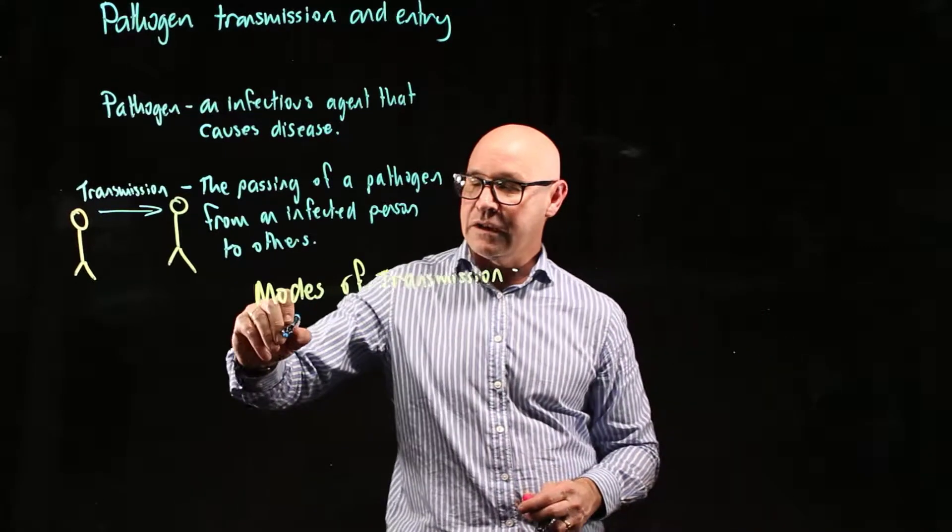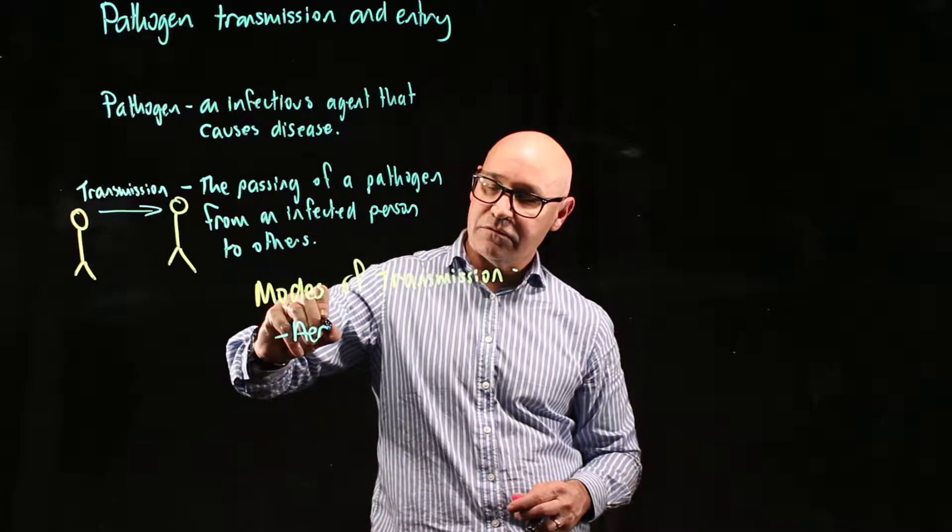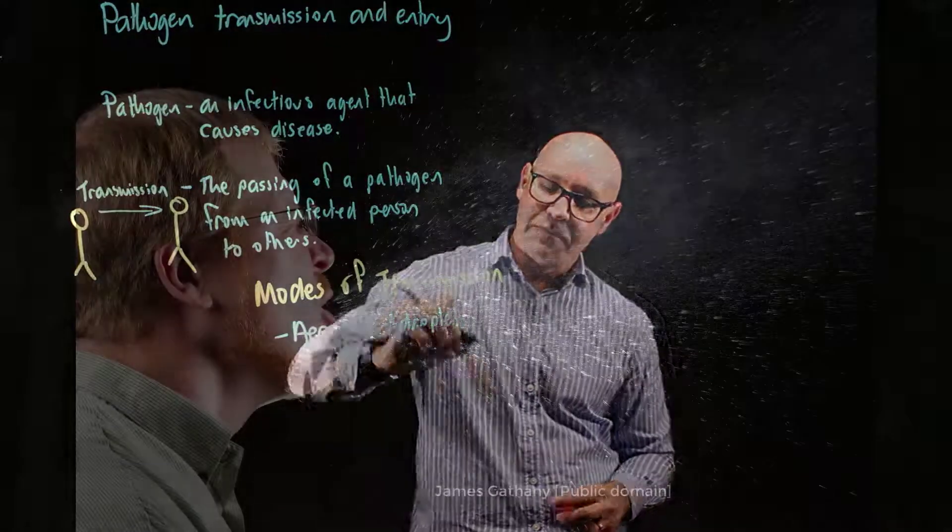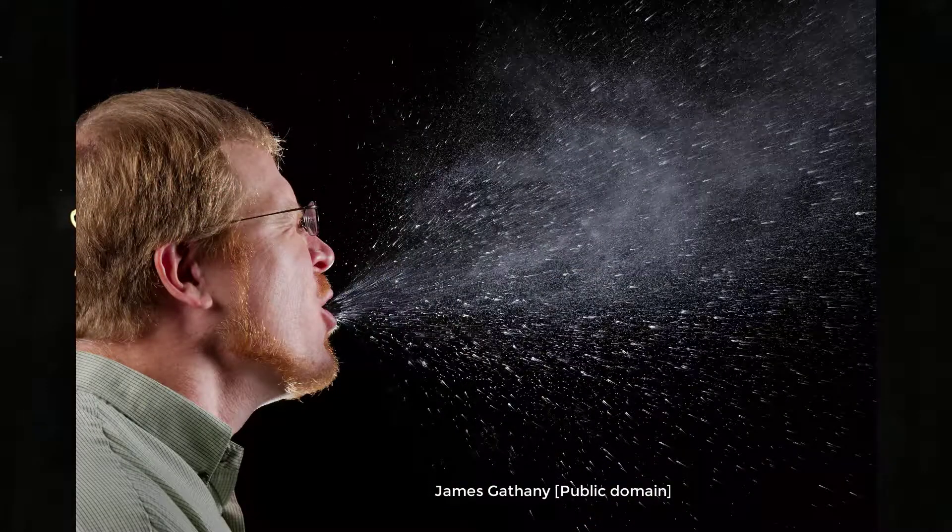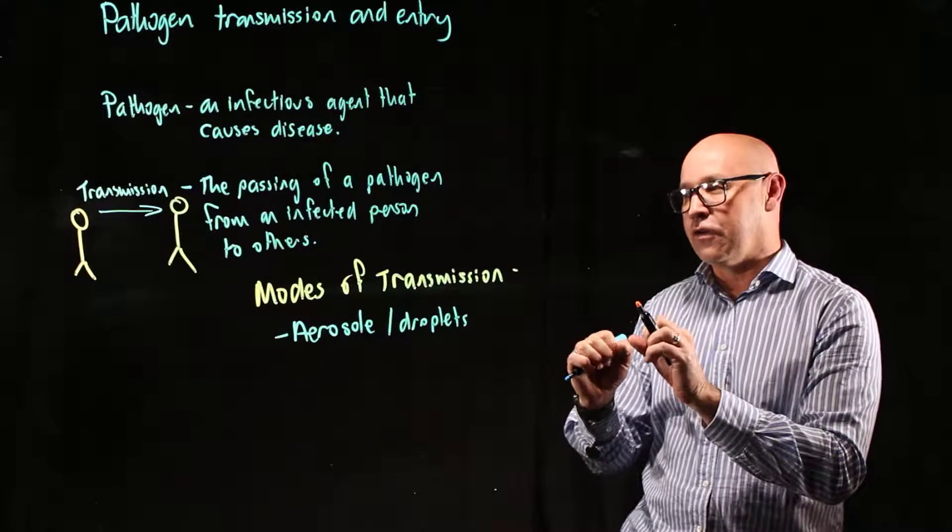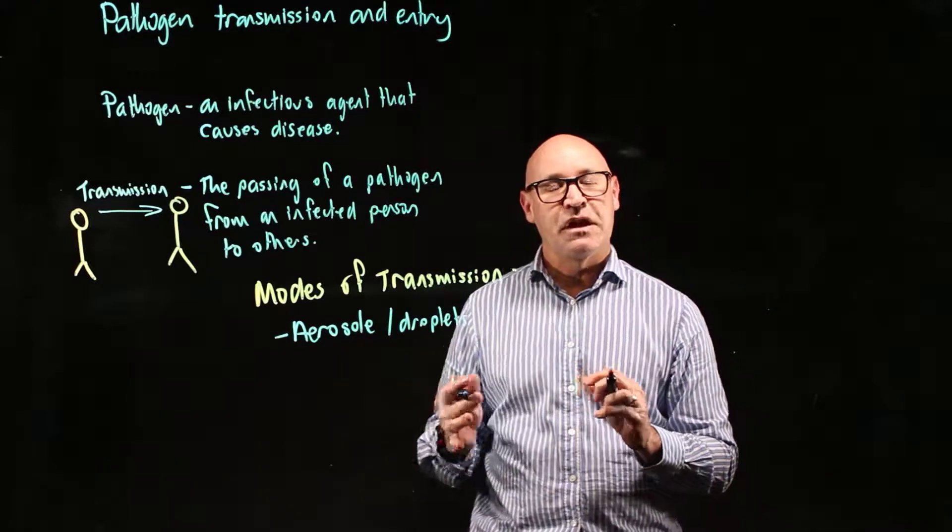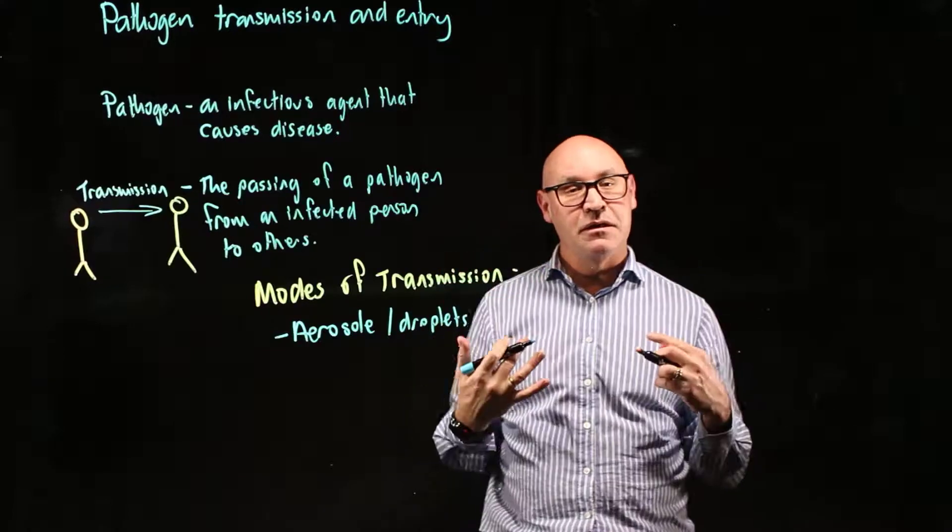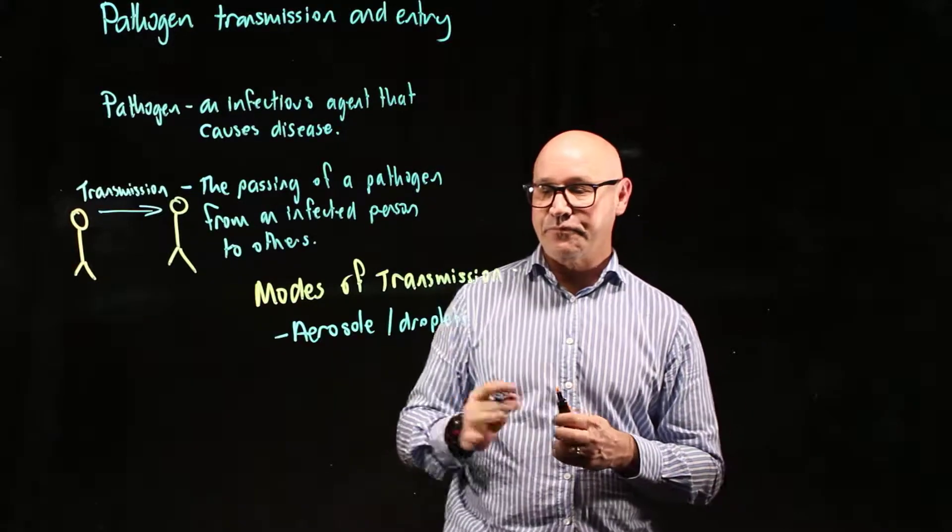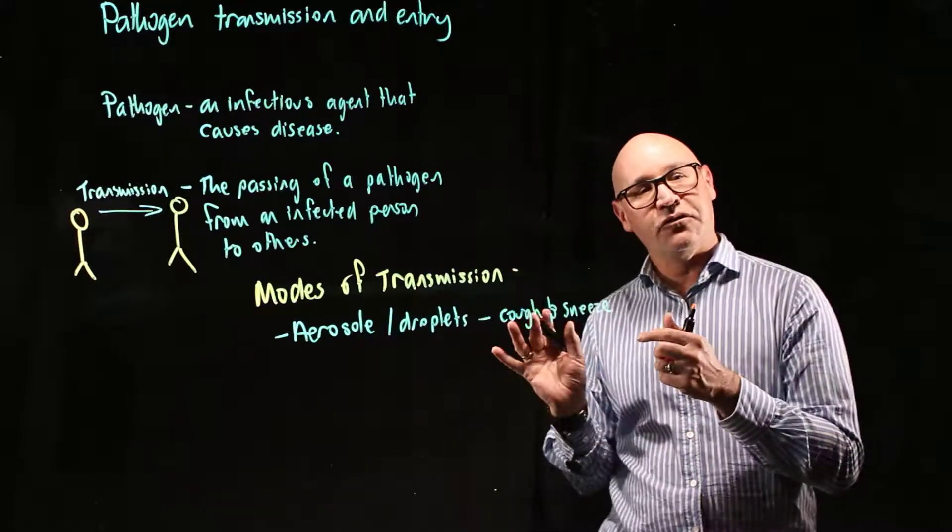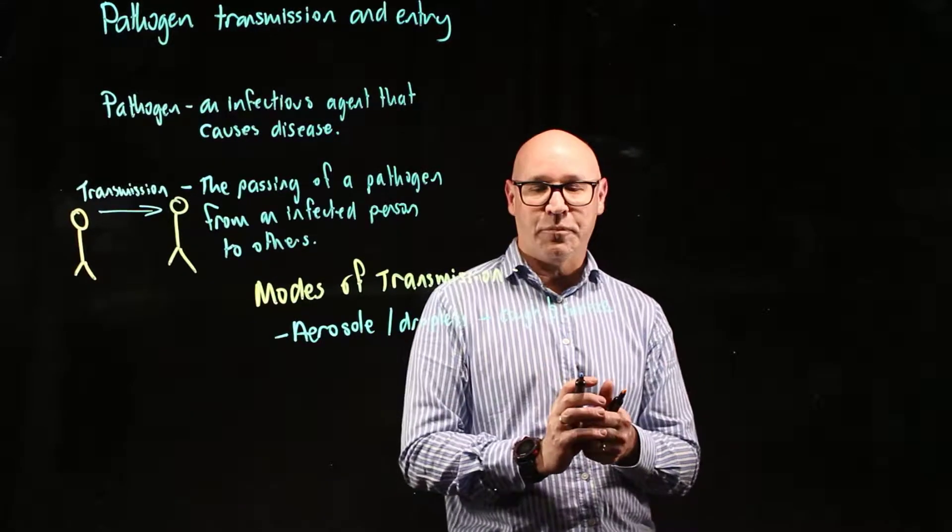The first one is called an aerosol and it's droplets. Sneezing and coughing produces very small little droplets, and inside those contains the pathogen, and that can waft through the air and then be breathed in by another person. So through coughing and sneezing, very small water droplets.